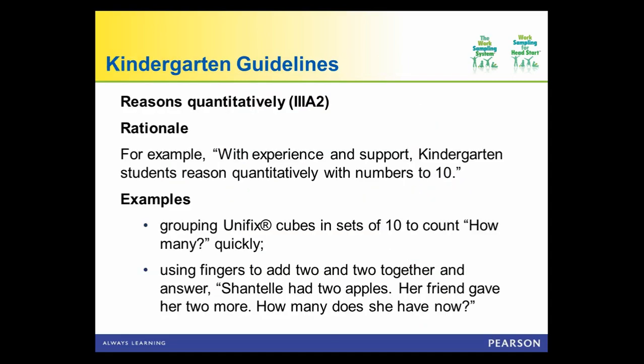With experience and support, kindergartners should be able to reason quantitatively with numbers to ten. You might notice them grouping unifix cubes in sets of ten, counting how many quickly, or using fingers to add two and two when given a word problem. Think about reasonable expectations and then what behaviors you might observe that would let you link the behavioral observation to this specific indicator.